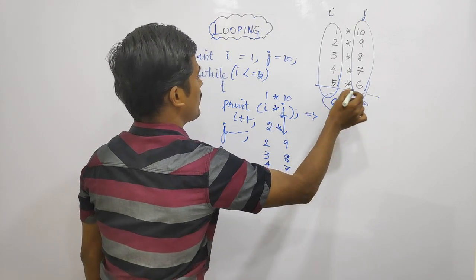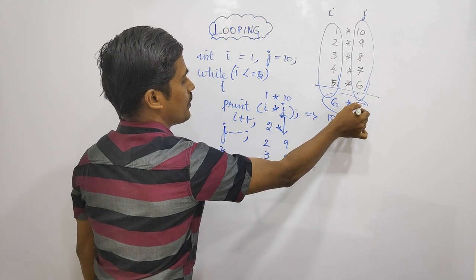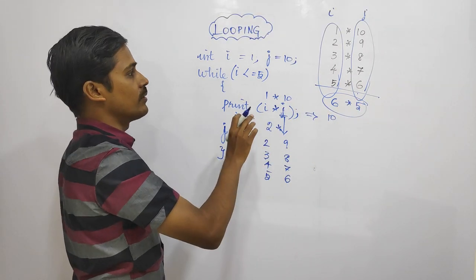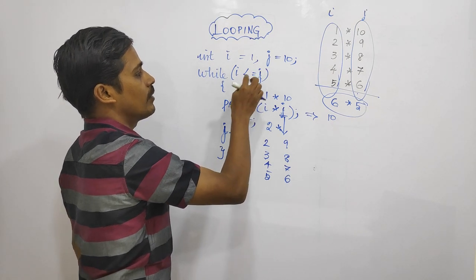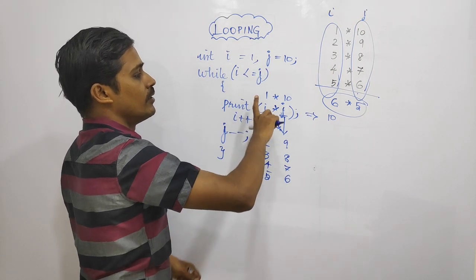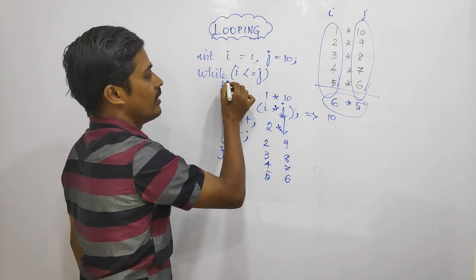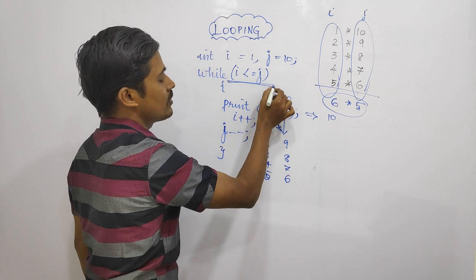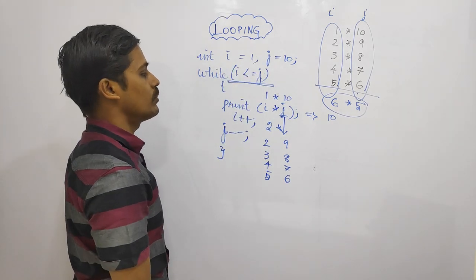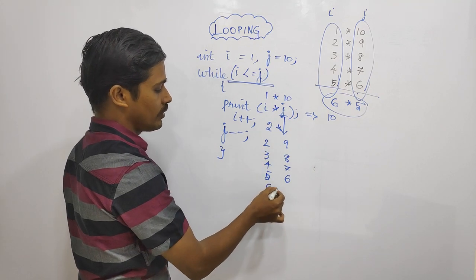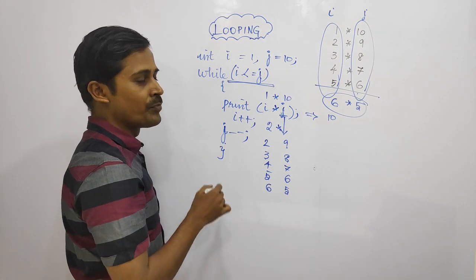Then we need to add a condition. That's it. If i is less than or equal to 5, we control the loop. This is the program for this looping problem.